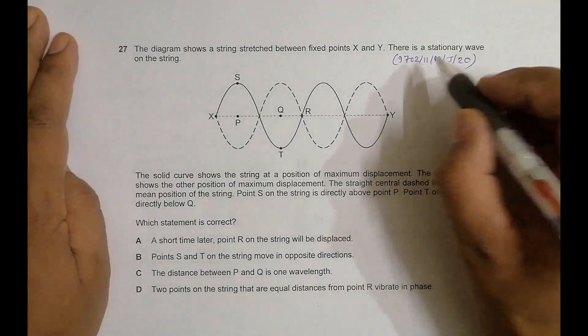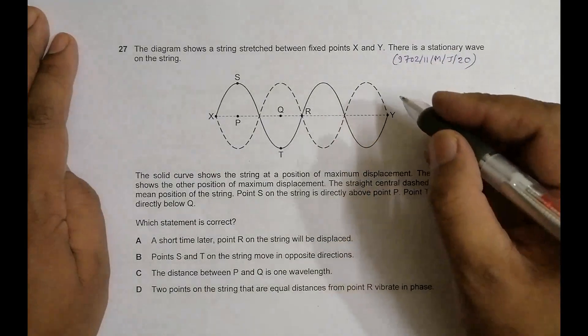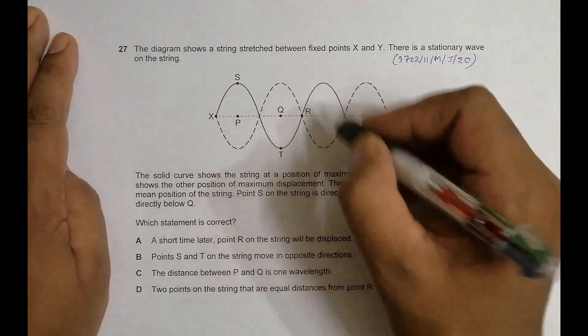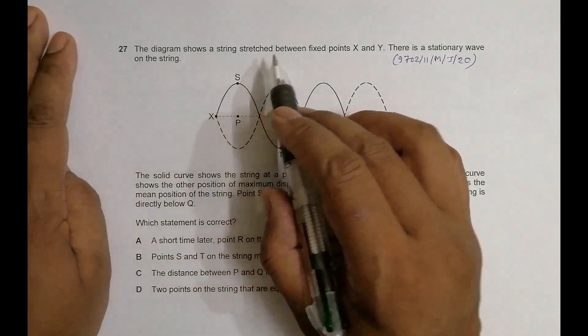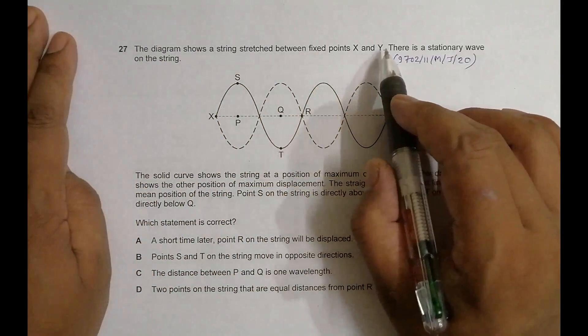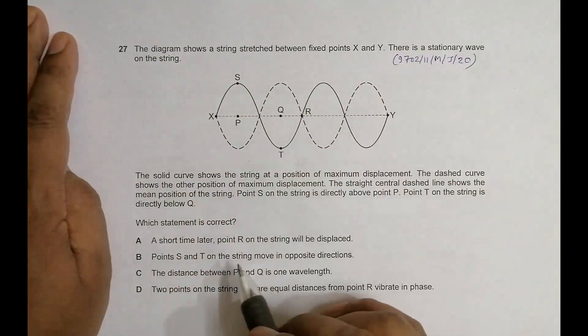Hello, for this 2020 major paper 1, question number 37, this is concerned with the chapter on superposition of waves. The diagram shows a string stretched between fixed points X and Y. There is a stationary wave on the string as shown here.